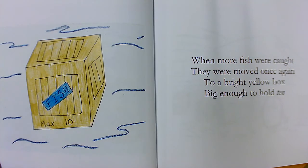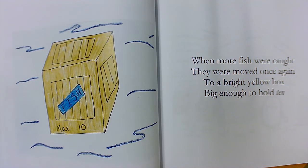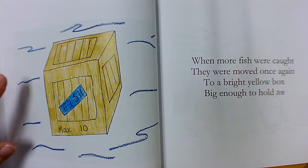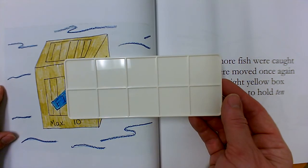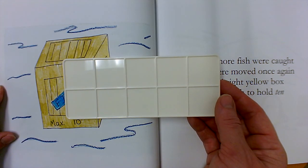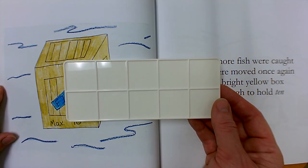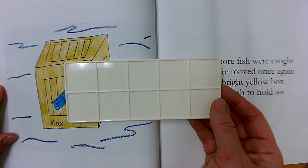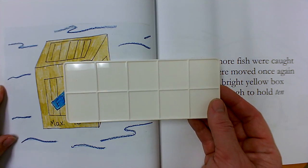When more fish were caught, they were moved once again to a bright yellow box big enough to hold 10. I know something else that's big enough to hold a 10. It's a 10 frame. When it's full, it holds 10. When it's not full, it has what we call some extra ones.